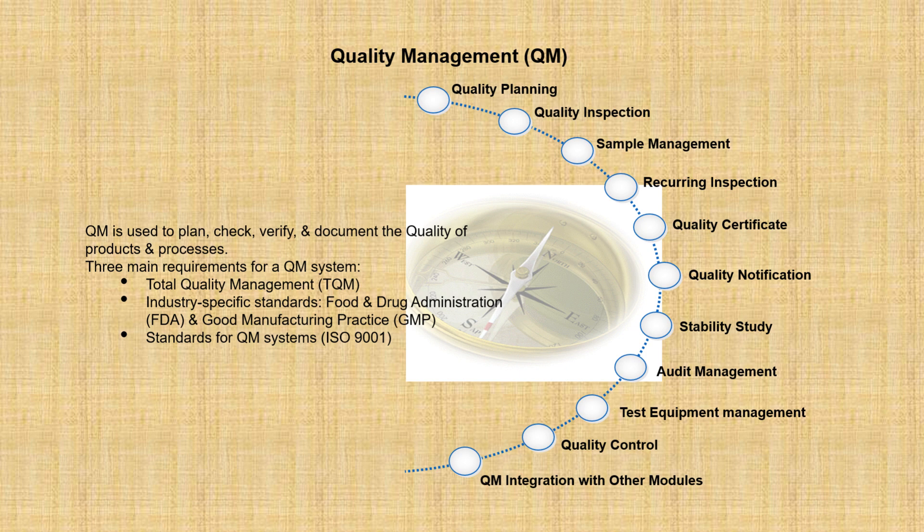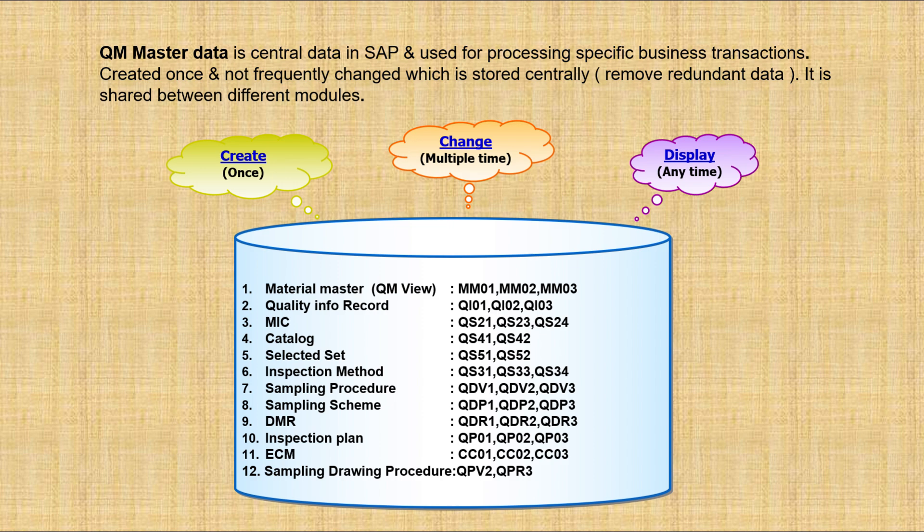The planning phase includes how you will inspect the material and what all things need to be created. You plan which materials will be inspected and how, what master data needs to be created, what sampling procedure will be used, what MICs will be tested, and what catalogs are required — whether you need a catalog for your MIC or not.